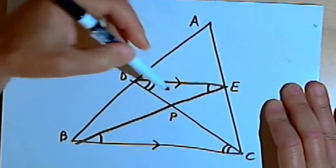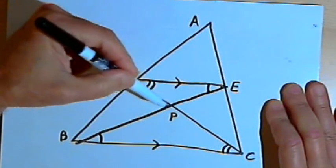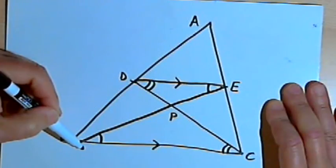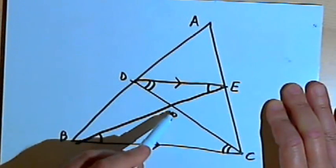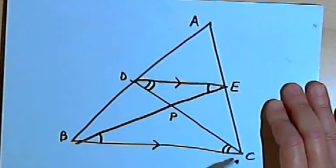side EP would be half as long as side PB, and side DP would be half as long as side PC.